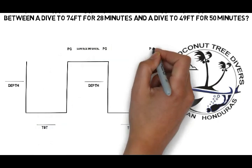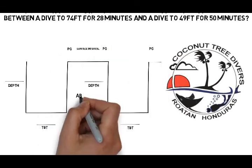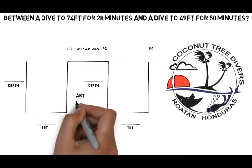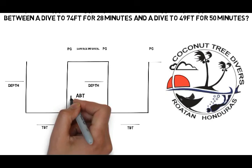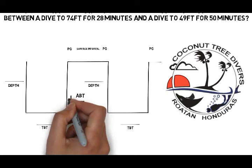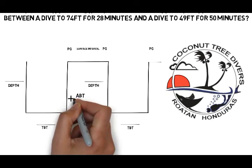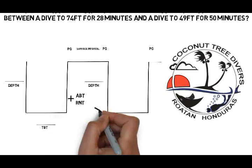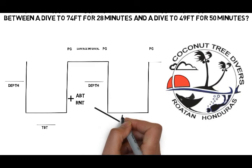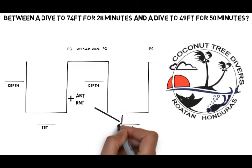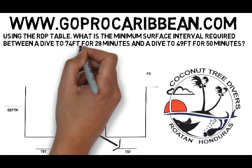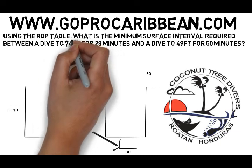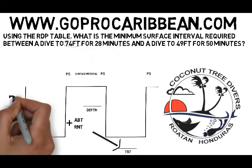This methodical approach will avoid making silly little mistakes and makes it much easier to understand what you need to do next. I put the ABT and RNT calculation in this diagram as I always do on table questions, although for this question it's not actually going to be necessary to use it.